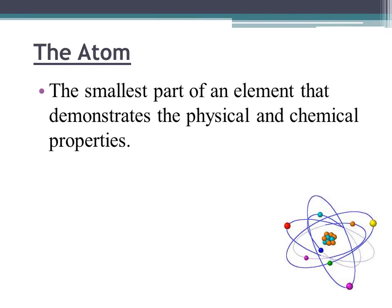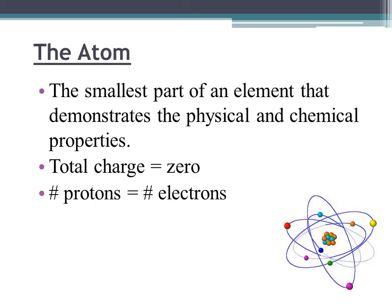The atom, being the smallest part of matter, consists of protons and neutrons in the nucleus, surrounded by electrons outside the nucleus. In an atom, the total charge is equal to zero. Therefore, the total positive and the total negative charges are equal, so the number of protons and the number of electrons in an atom are equal.